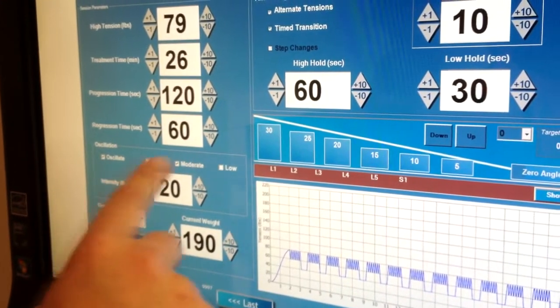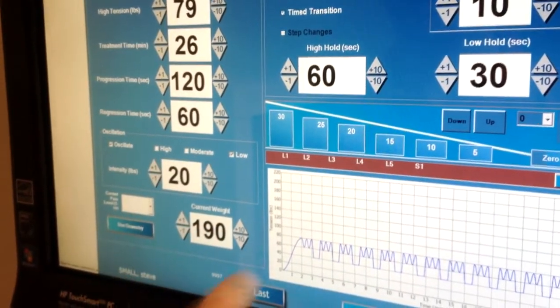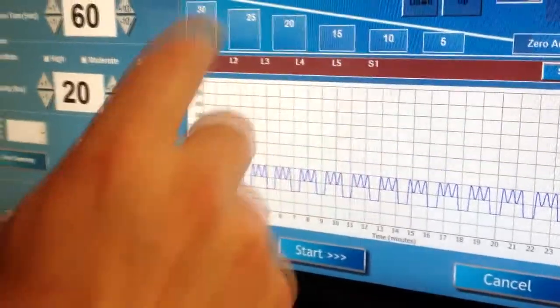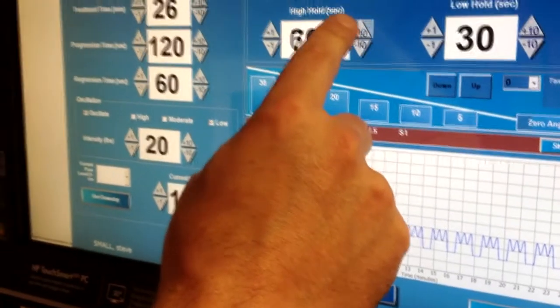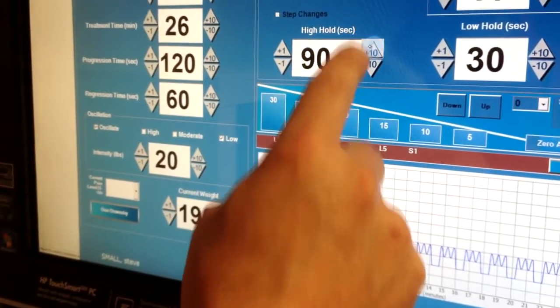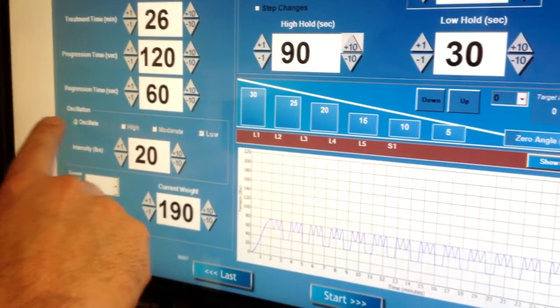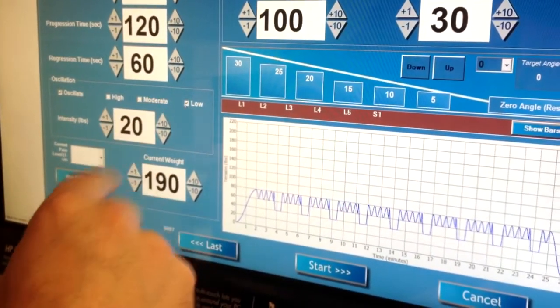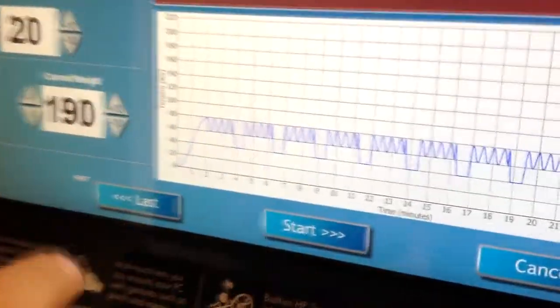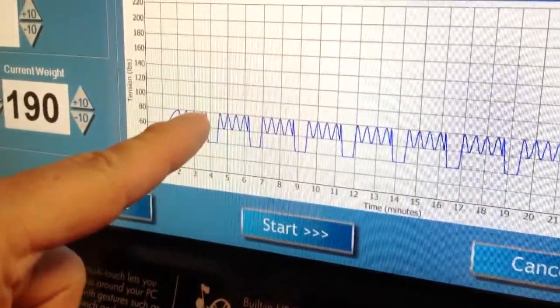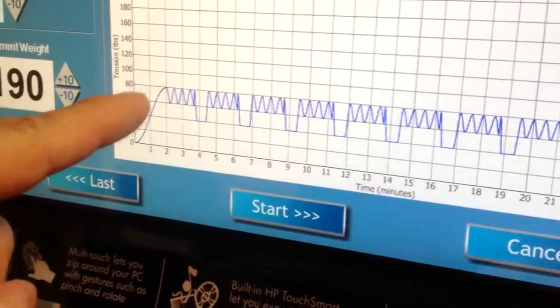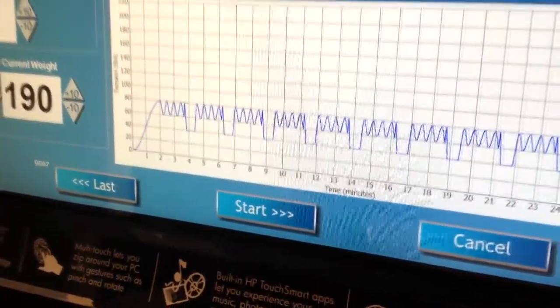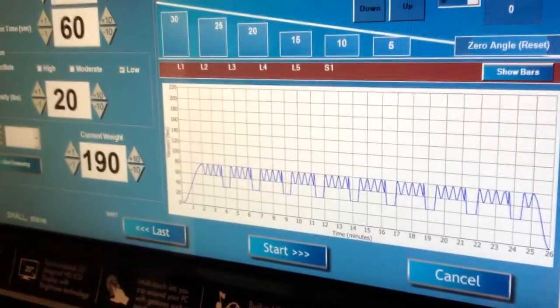But again, if we wanted to go back to our low intensity, if we wanted to increase the amount of time the joint is held open and then mobilized, I can adjust the high hold. And so now I have a joint open for 90 seconds. So a minute and a half, and that gives us roughly four cycles of oscillation when the joint is distracted.